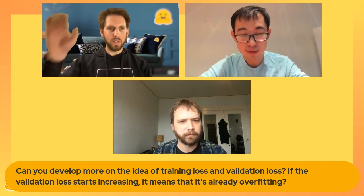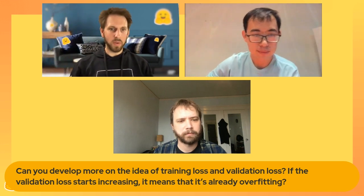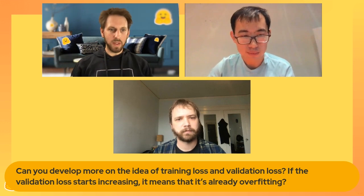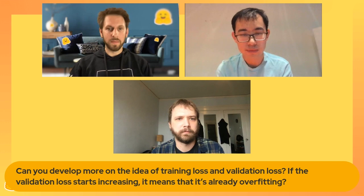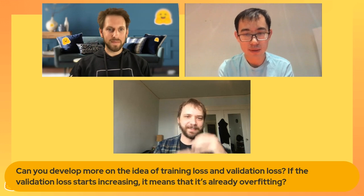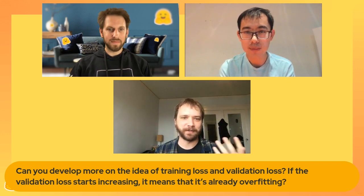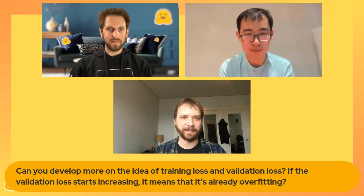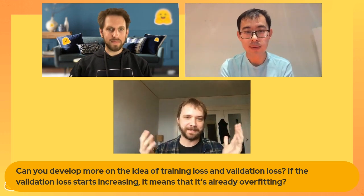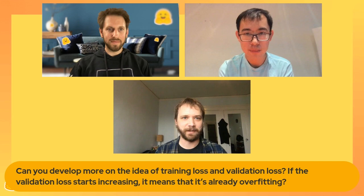Final question for Matt: can you expand on training loss vs. validation loss? If your accuracy is going down and loss is going up on validation, that's a sign of overfitting, though things can be noisy. In the examples shown — without pre-training, just 25,000 input examples — it's very easy to overfit. For all those simple models, if you keep training for a while, you'll notice overfitting starting to appear.